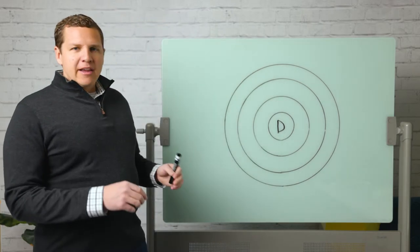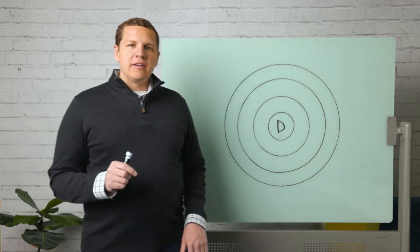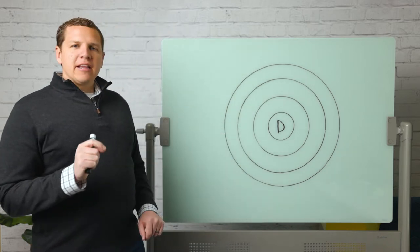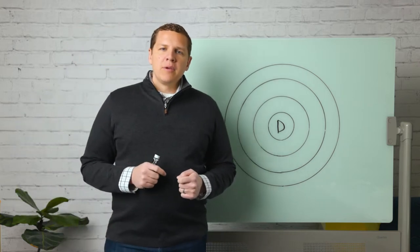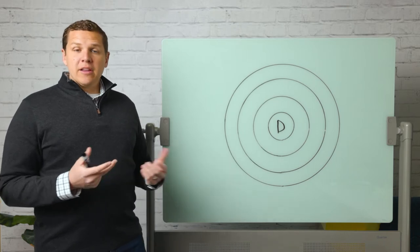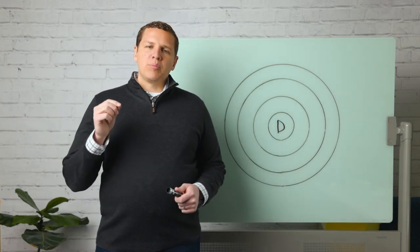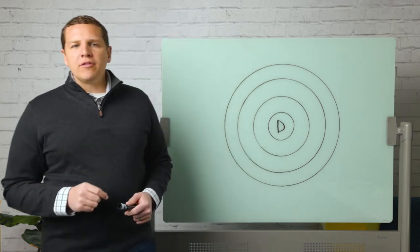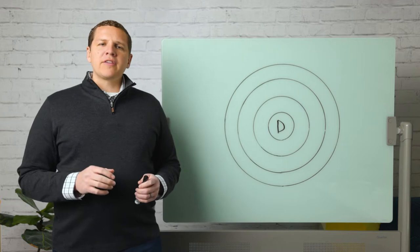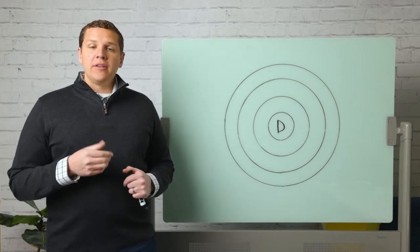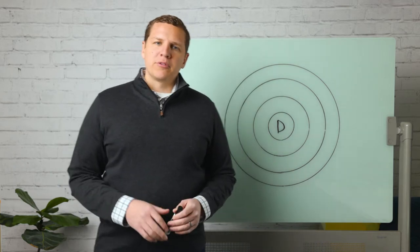Now to help illustrate the cost-effectiveness of Google Ads, we've drawn a target here, and at the middle of the target is the letter D. The letter D stands for defensive, and we're going to first talk about defensive campaigns within your Google Ads, and they're at the middle of the target because they are the most cost-effective campaigns to run in Google. What is a defensive campaign, you might be asking? A defensive campaign is one where we are protecting your name. For example, we have an apartment community right here in Lincoln, Nebraska, where we're located, called Lexington Ridge Apartments.